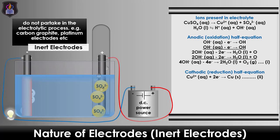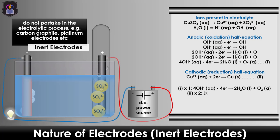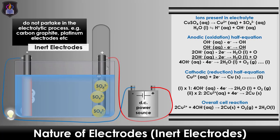Balance the number of moles of electrons transferred by multiplying the anodic half equation by one and the cathodic half equation by two. Add the two equations to get the overall cell reaction.